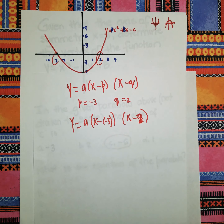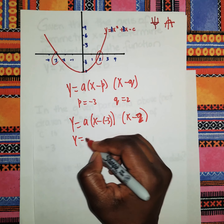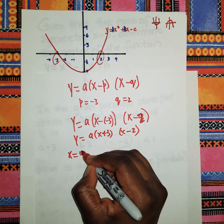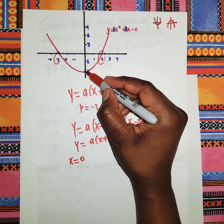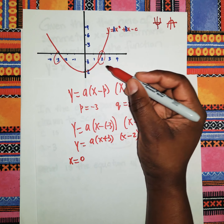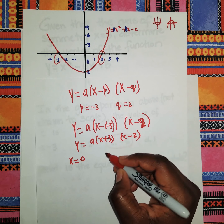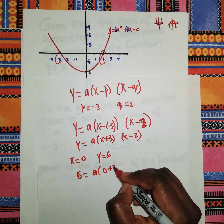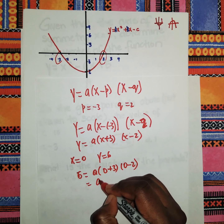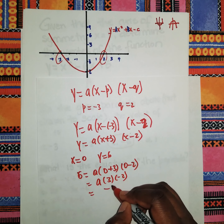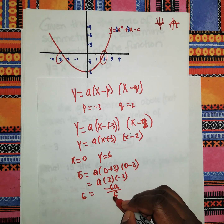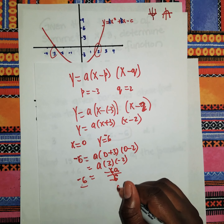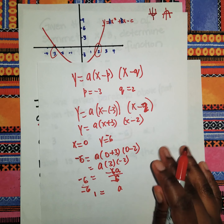To find the value of 'a', we know a point on the graph — the y-intercept coordinate is (0, 6), so when x = 0, y = 6. Substituting: 6 = a(0 + 3)(0 − 2), which gives 6 = a(3)(−2) = −6a. Dividing both sides by −6, we get a = −1. Wait — that gives a = positive one. So a = 1.